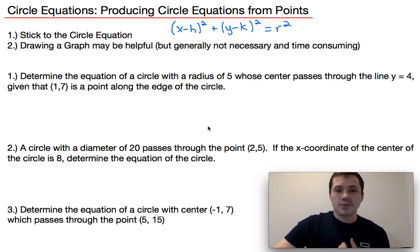Alright, so let's do a couple of example problems. Let's kind of dive right into it. So the first example problem that we have is to figure out the equation of a circle with a radius of 5. So I'm just going to make a quick note right here that r is equal to 5.